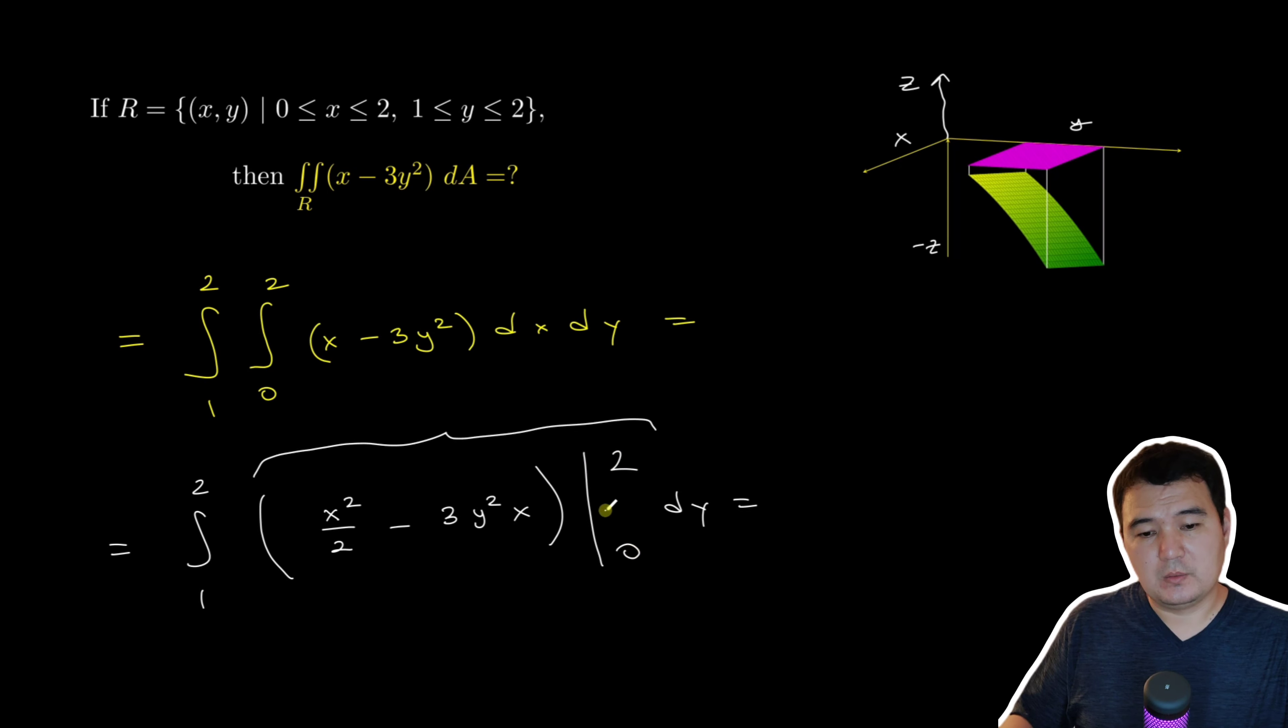Because the idea is we have to plug this 2 and then 0 and subtract them. But since when you plug 0, that makes everything 0, so we will just plug 2 and write it like this. So 2 squared over 2 minus 3 times y squared times 2 dy.